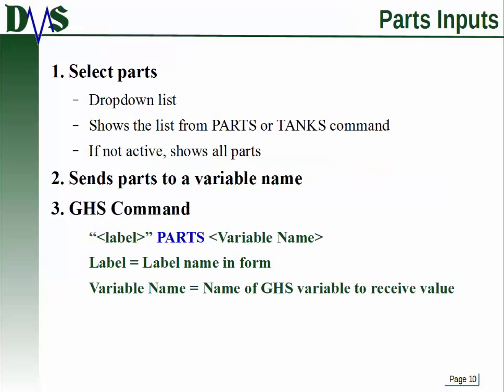Another useful form item is a parts input. This lets you select different parts from the model definition, creating a drop-down list that GHS automatically populates with items from the parts command or the tanks command. If those commands are not active, GHS will show all parts. The command syntax is: label, space, keyword 'parts', and then the variable name. The label shows up on the form as the name for the parts selector, and the variable name is the GHS variable that receives the values of the selected parts.